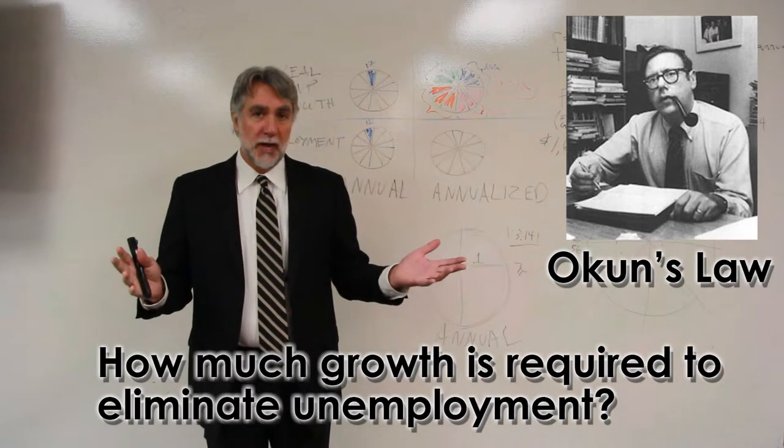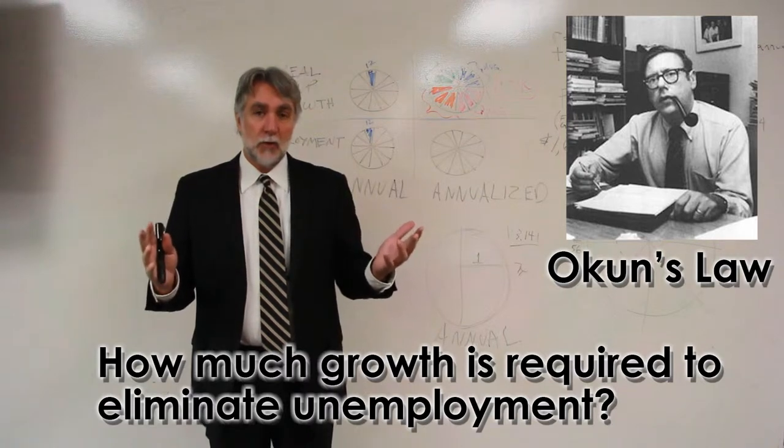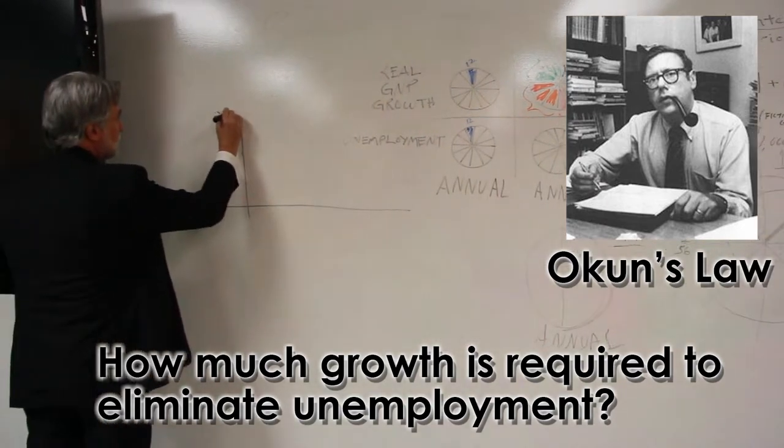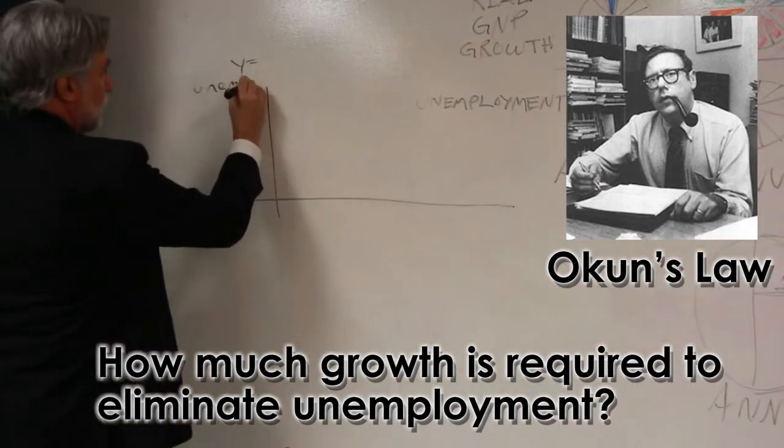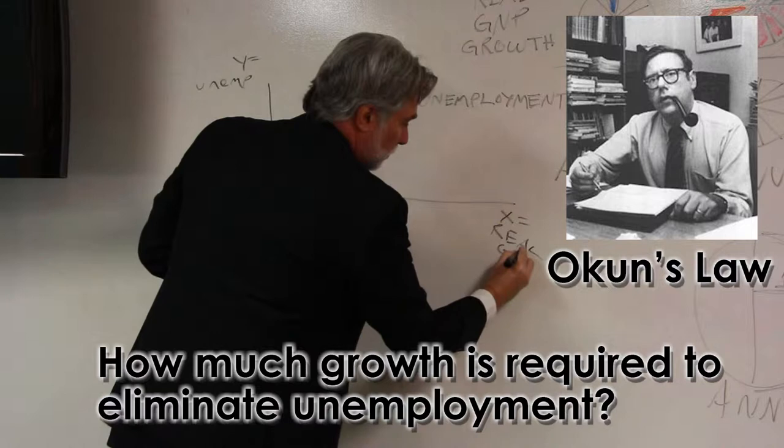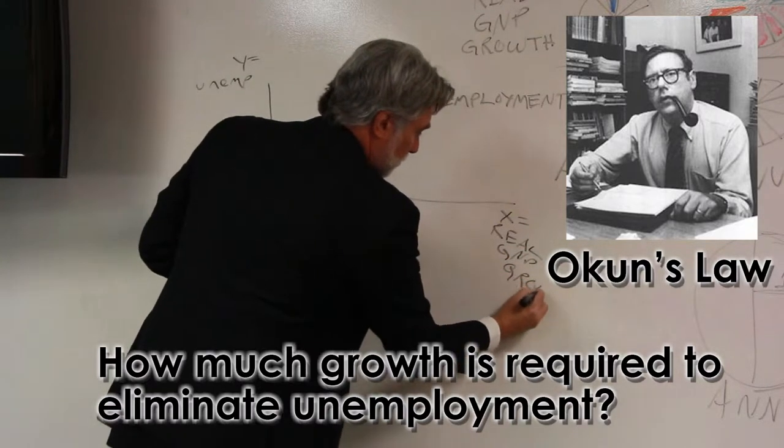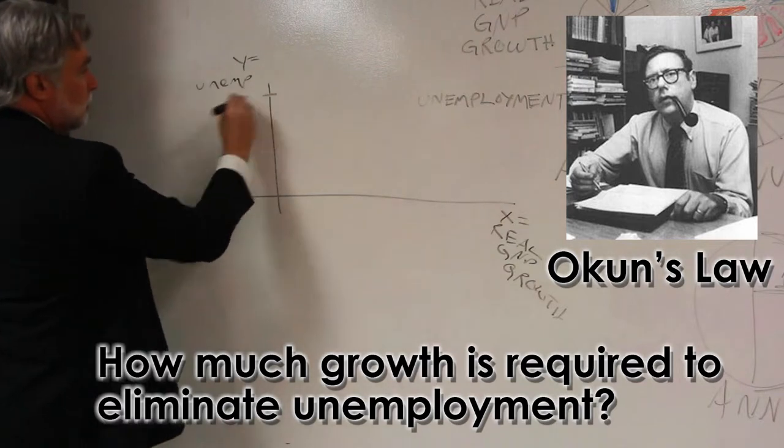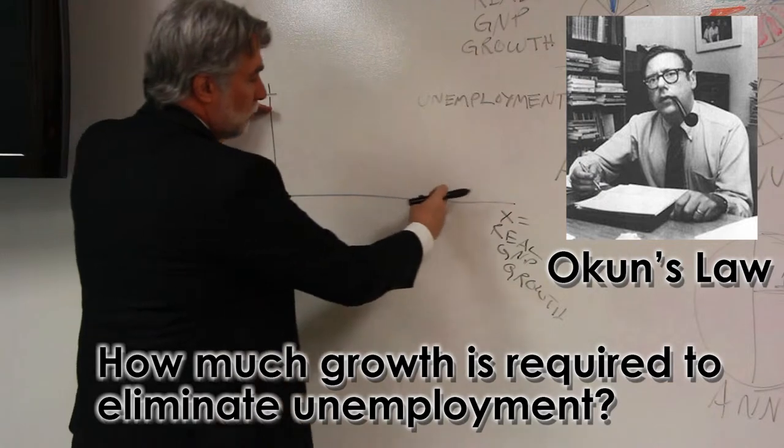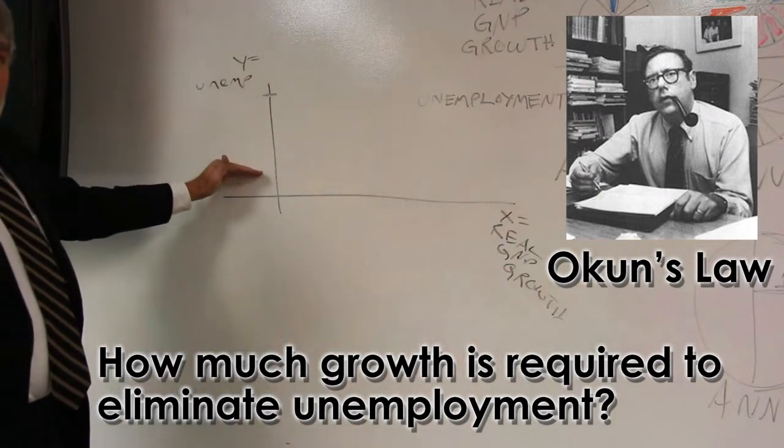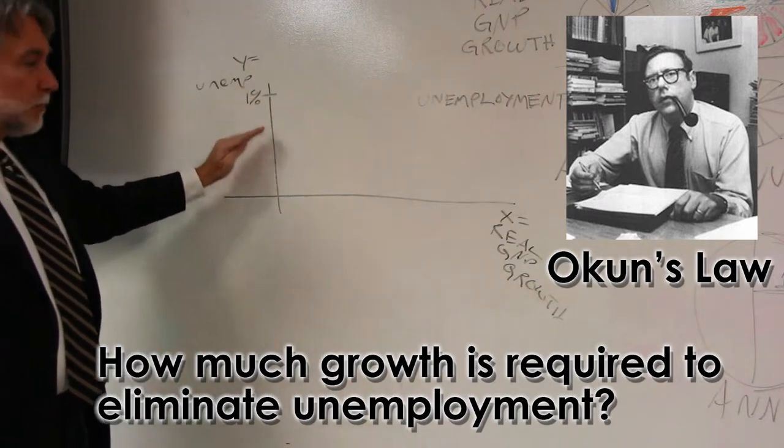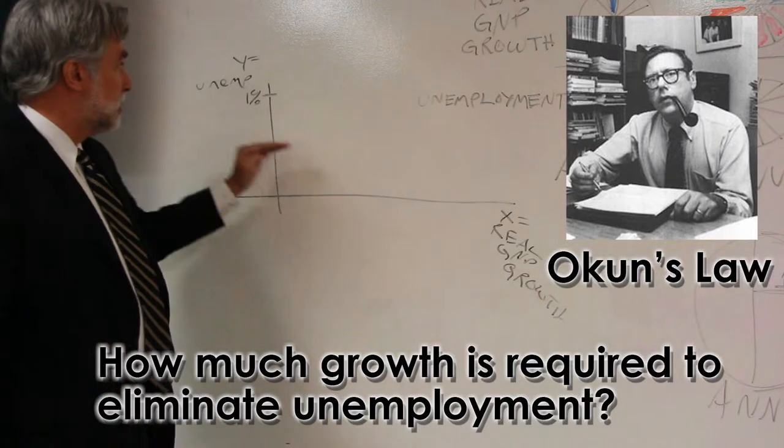If we have an X, Y, Z axis such that Y equals the level of unemployment, and if we have an X axis equals the level of real GNP growth, what is the angle, what is the slope of this line that says that as we grow more and more, the unemployment will actually come down? This represents one percentage point of unemployment. So how many points of percentage GNP growth do we have to have to bring this down?